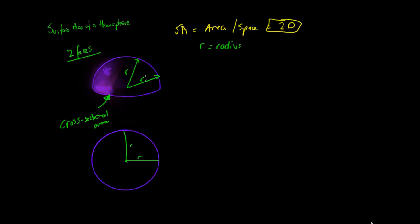To work out the surface area of a hemisphere we have to do it in two parts. First we need to work out the area of the curved face, and then we need to work out the area of the cross-section. Then we add them together.